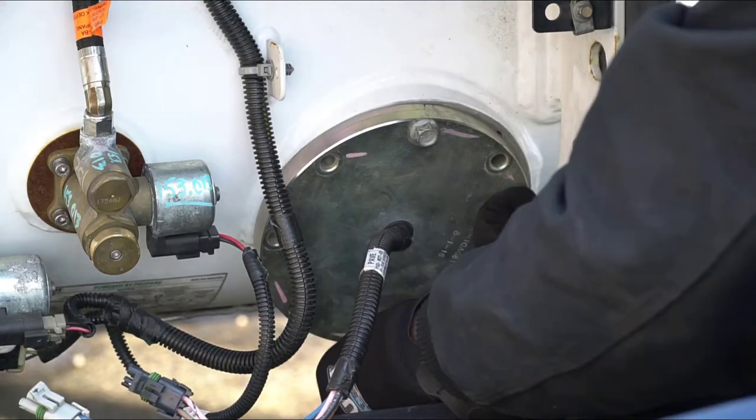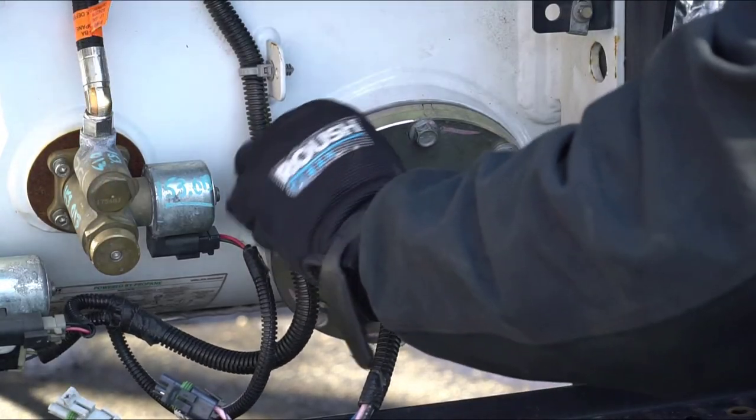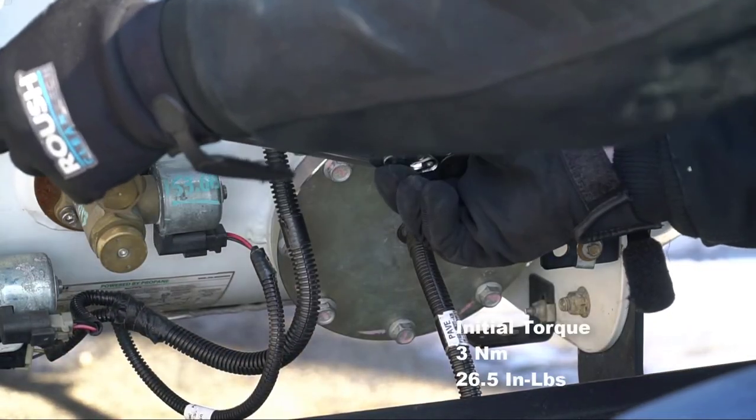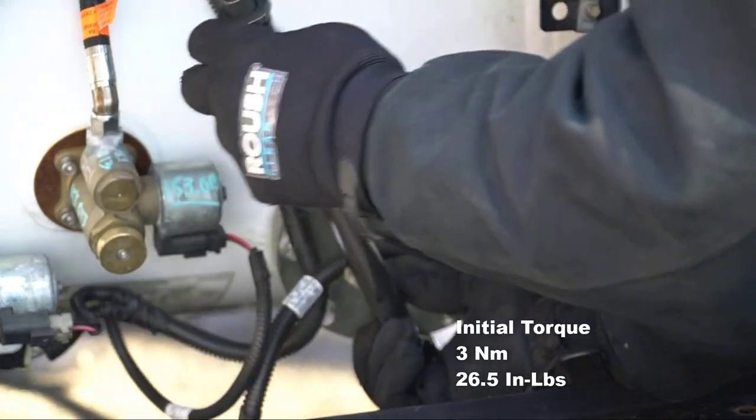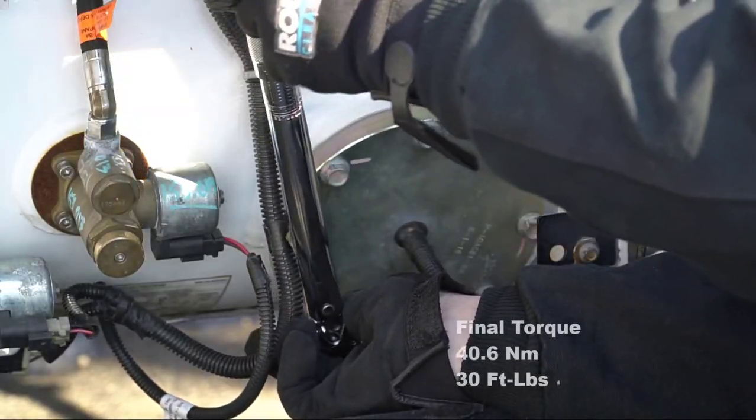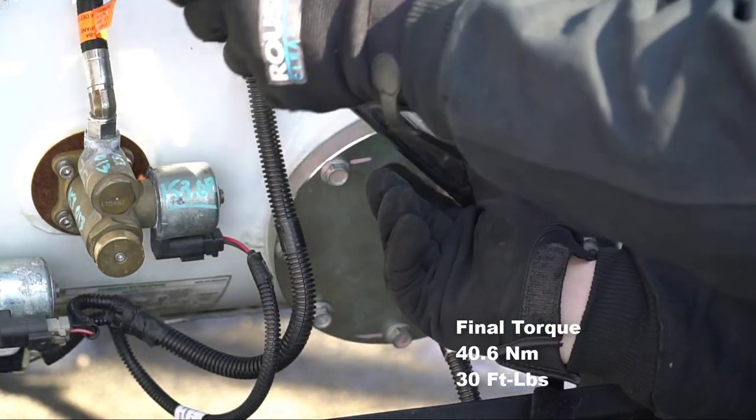Install the access flange on the tank and hand tighten the eight screws. Torque in a star pattern to an initial 3 Nm. Then torque in a star pattern to 40.6 Nm.